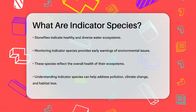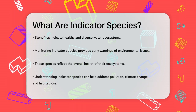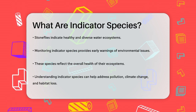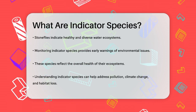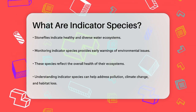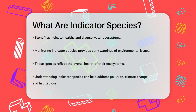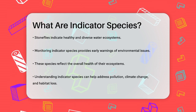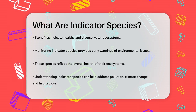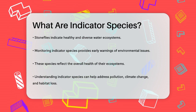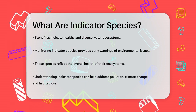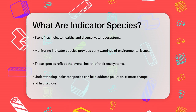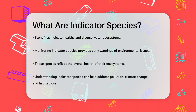These species are not just random choices — they are carefully selected because they reflect the overall health of their ecosystem. By monitoring these indicator species, scientists can get early warnings about environmental issues like pollution, climate change, and habitat loss. So the next time you hear about an indicator species, remember that it's like a sentinel of the environment, telling us if everything is okay or if there's a problem that needs attention.